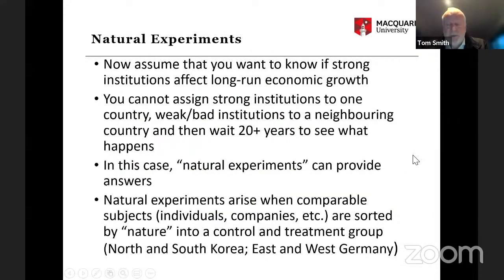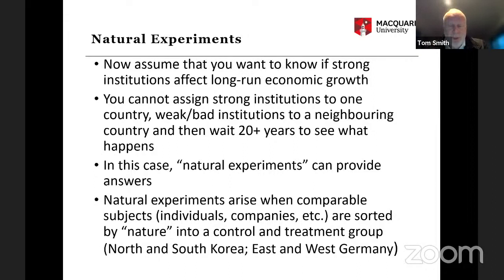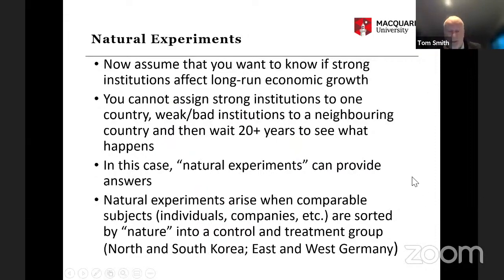What about natural experiments, where you go outside the laboratory? Say you wanted to know whether strong institutions affect long-run economic growth. You can't assign strong institutions to one country and weak institutions to another and wait 20, 30, 40, 50 years. Sometimes natural experiments arise where populations are sorted by nature into control and treatment groups — for example, North and South Korea, or East and West Germany.